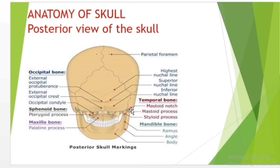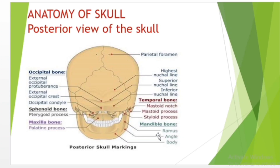The styloid process is a slender, pointed piece of bone just below the ear. It projects downward and forward from the inferior surface of the temporal bone and serves as an anchor point for several muscles associated with the tongue and larynx.